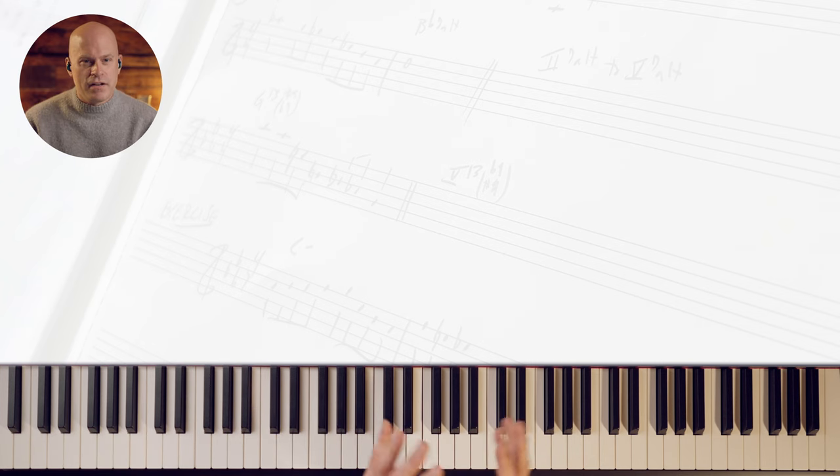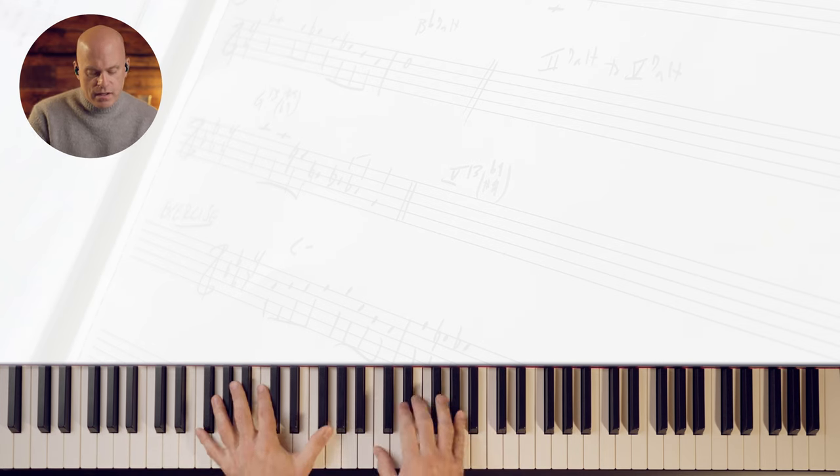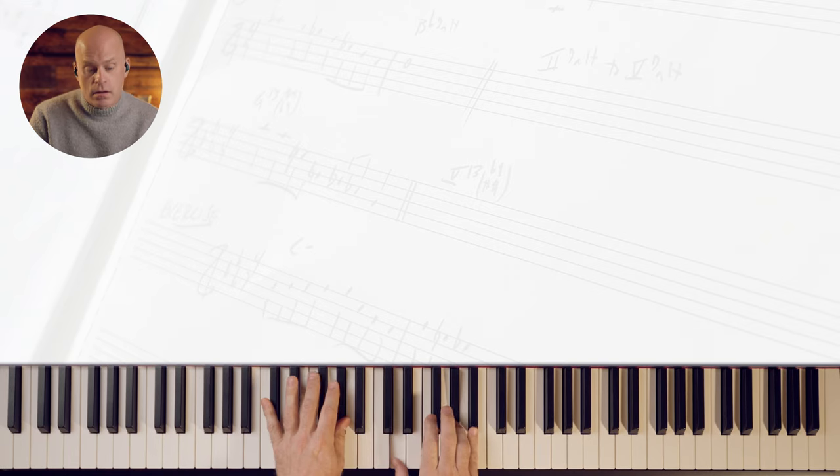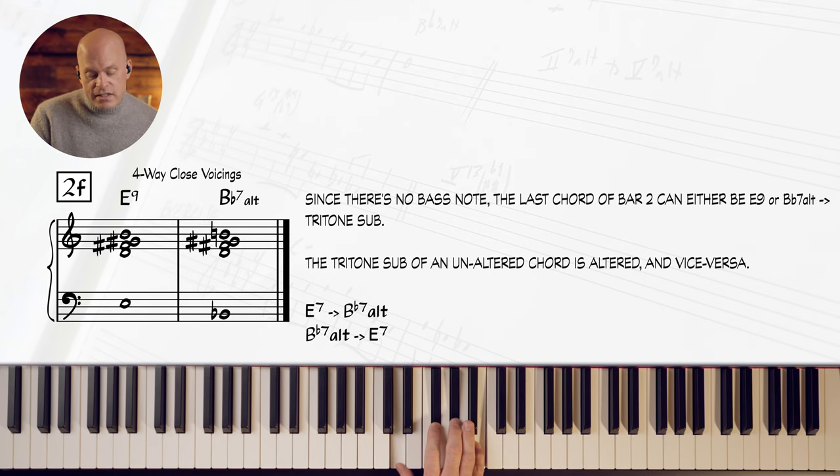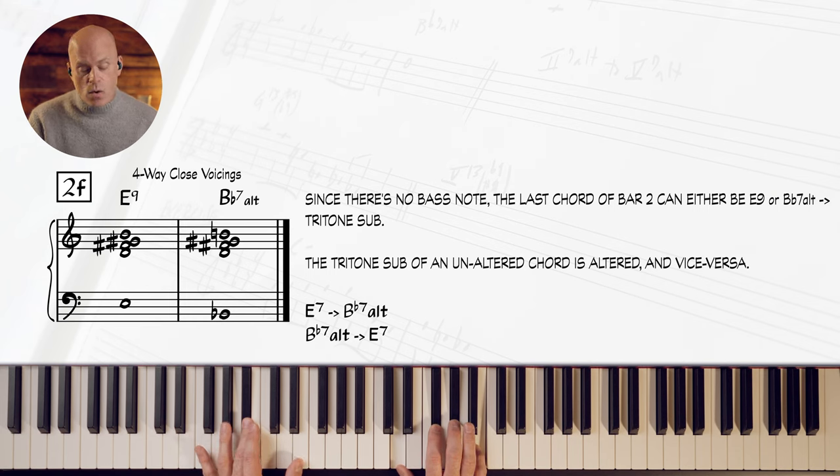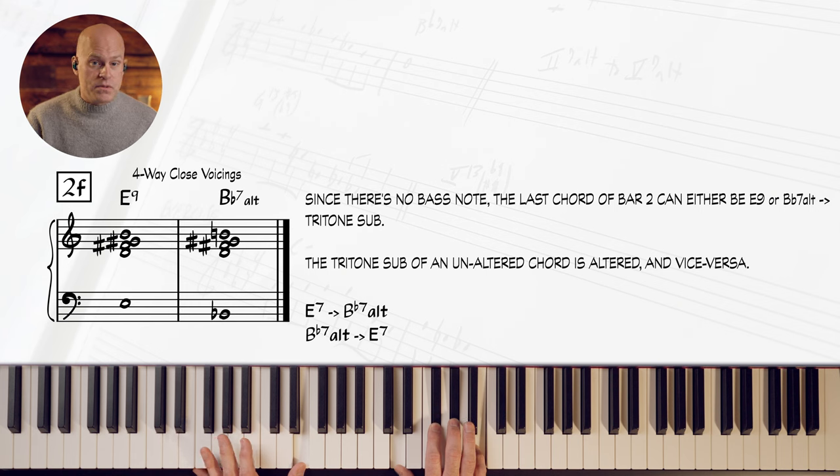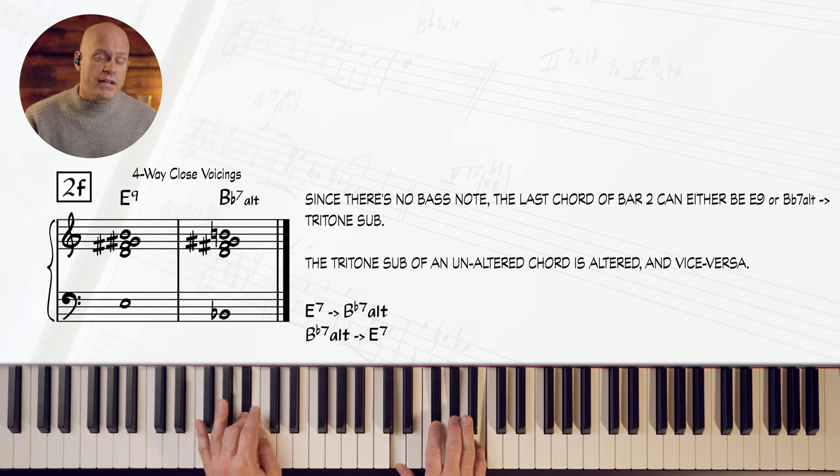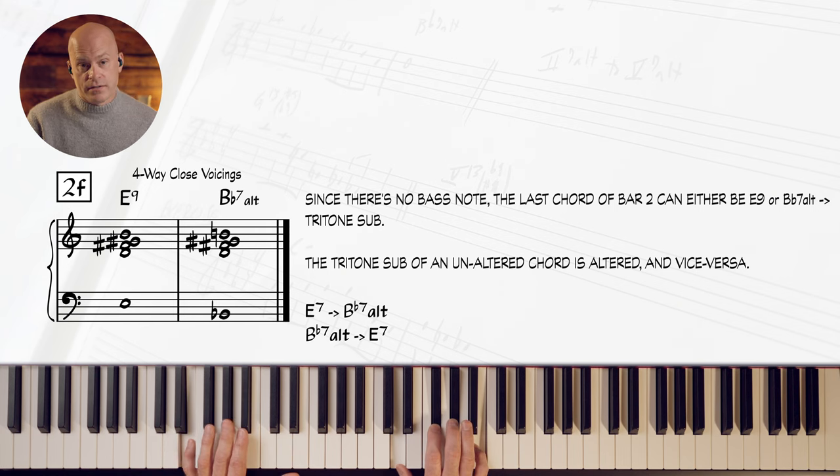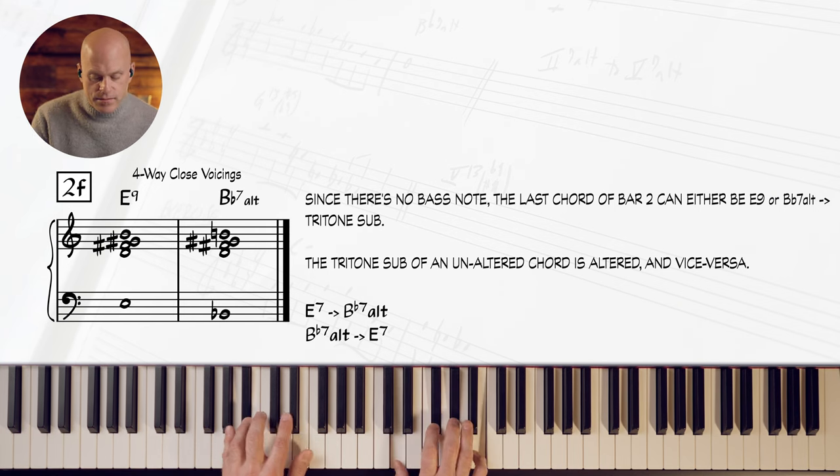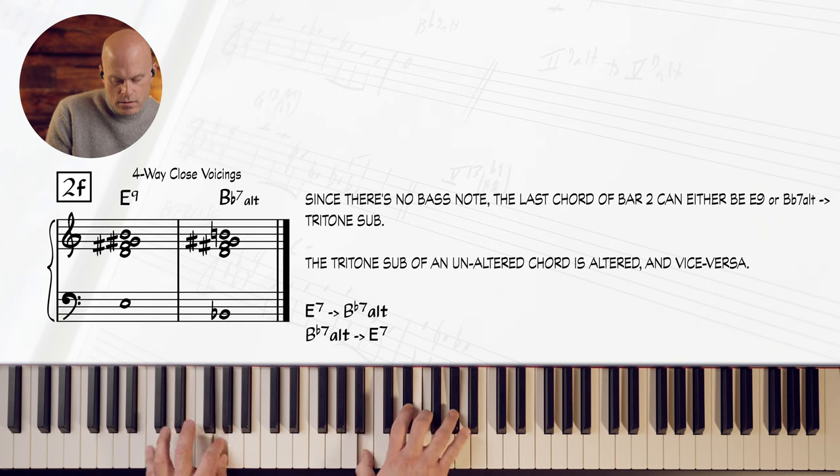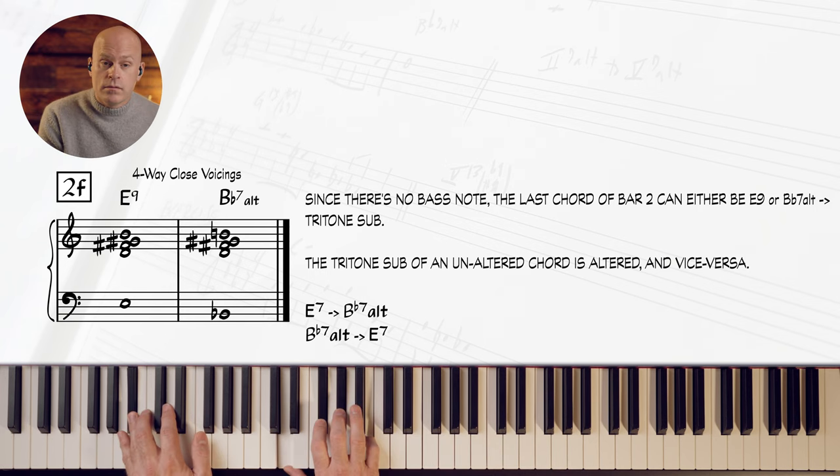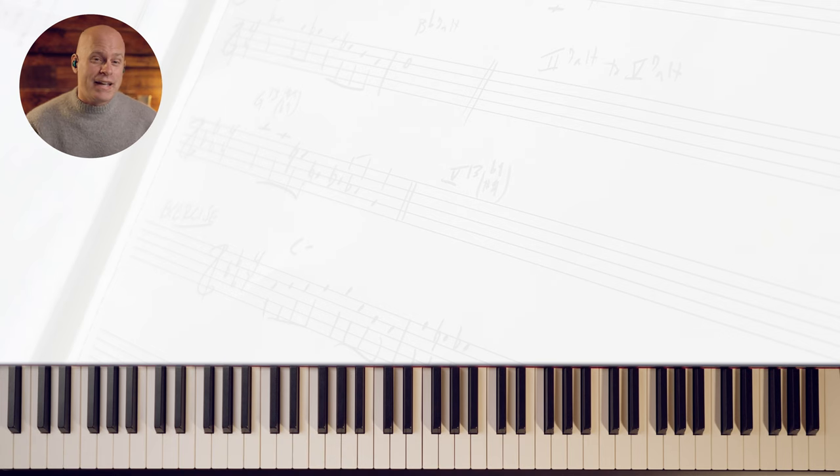That's all coming from the original example. This is the last part of bar two, but he does this - he plays this four-way close voicing and then resolves down to the E. So this voicing is implying B7 or B7 flat 13, flat nine, or E9, which is the tritone substitution. When you have a really altered five chord, its tritone sub will be unaltered. But now I got a voicing I can practice.